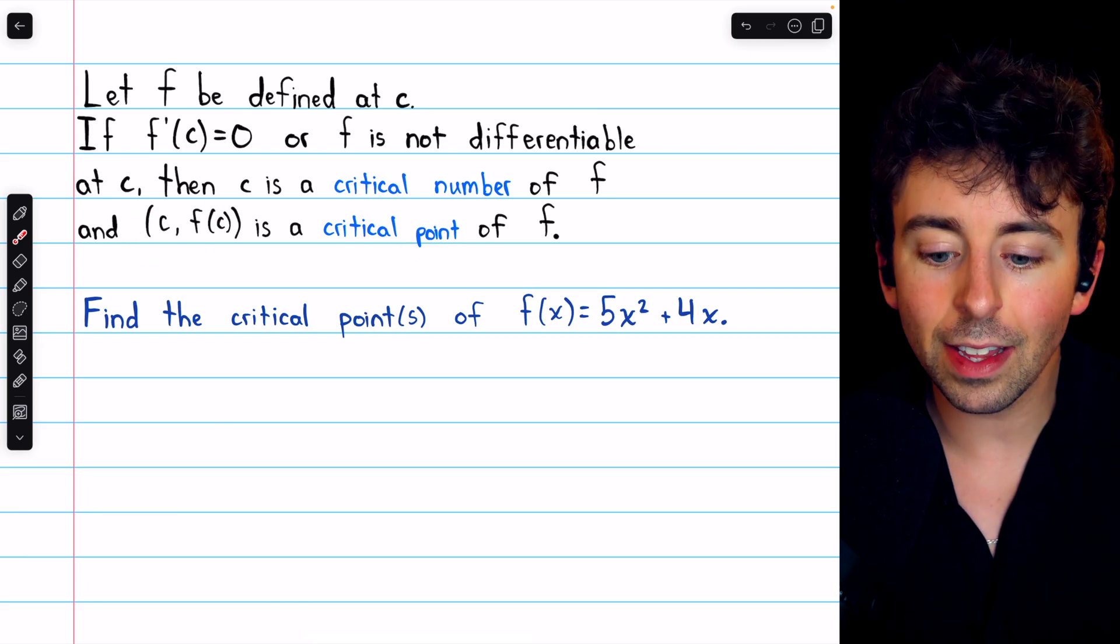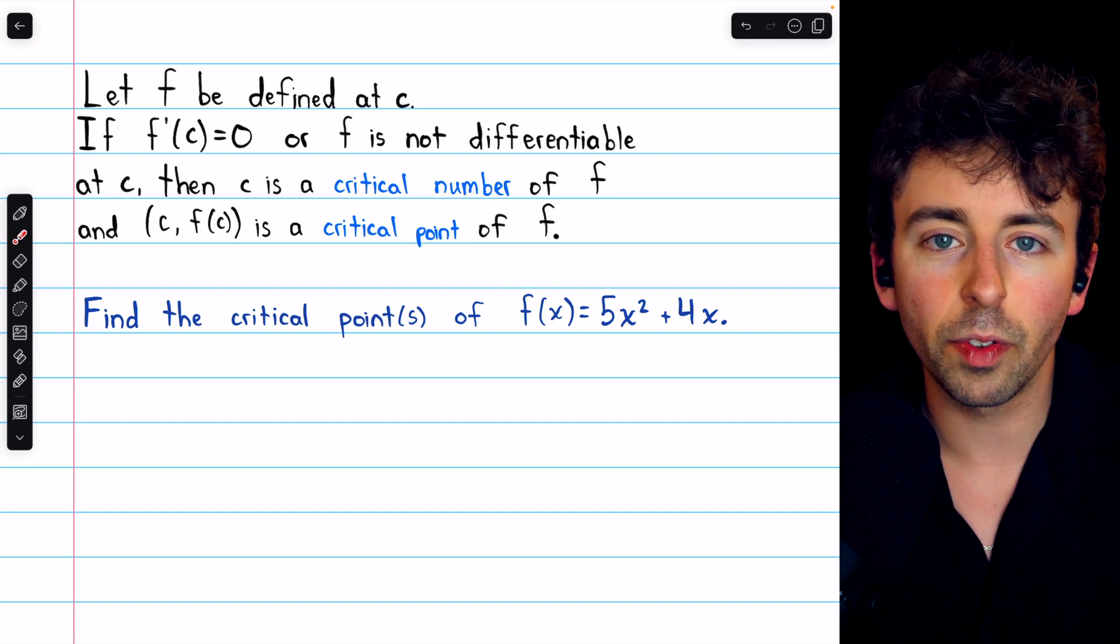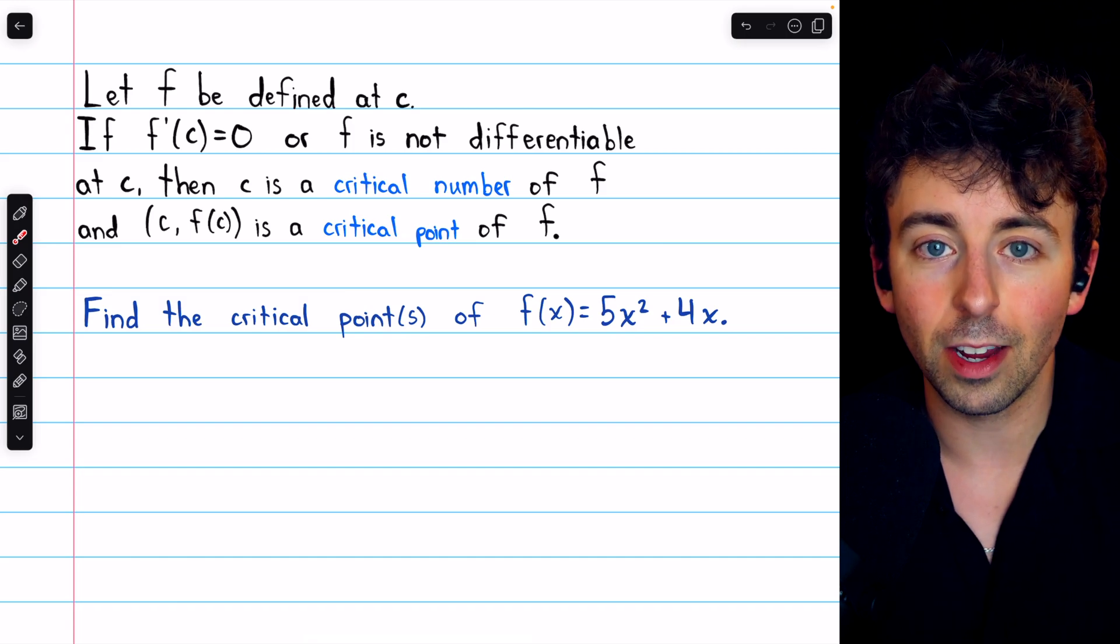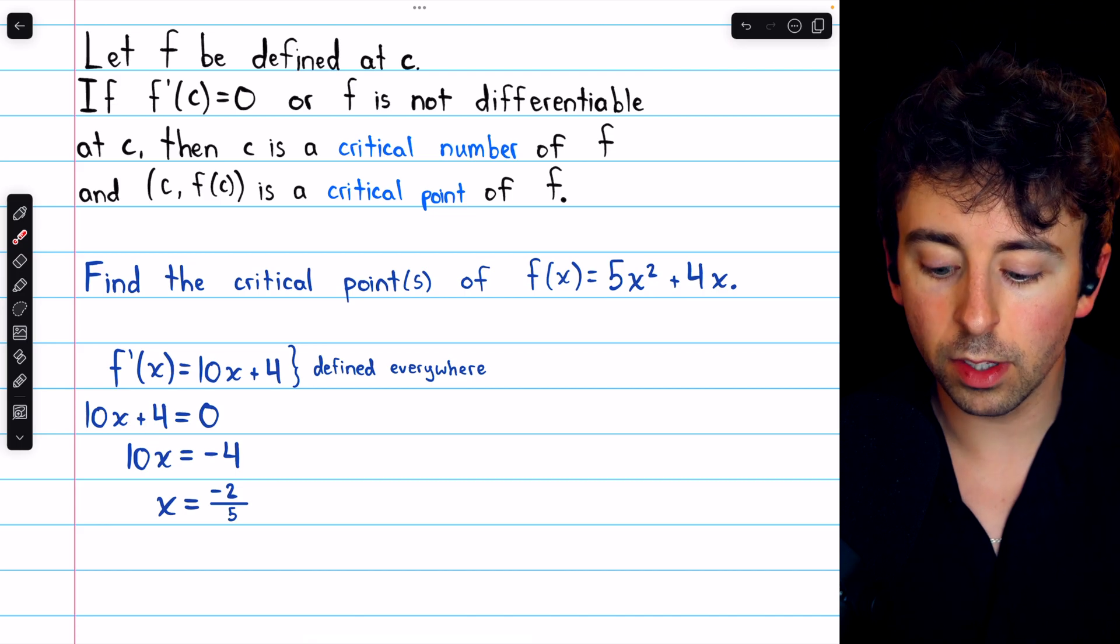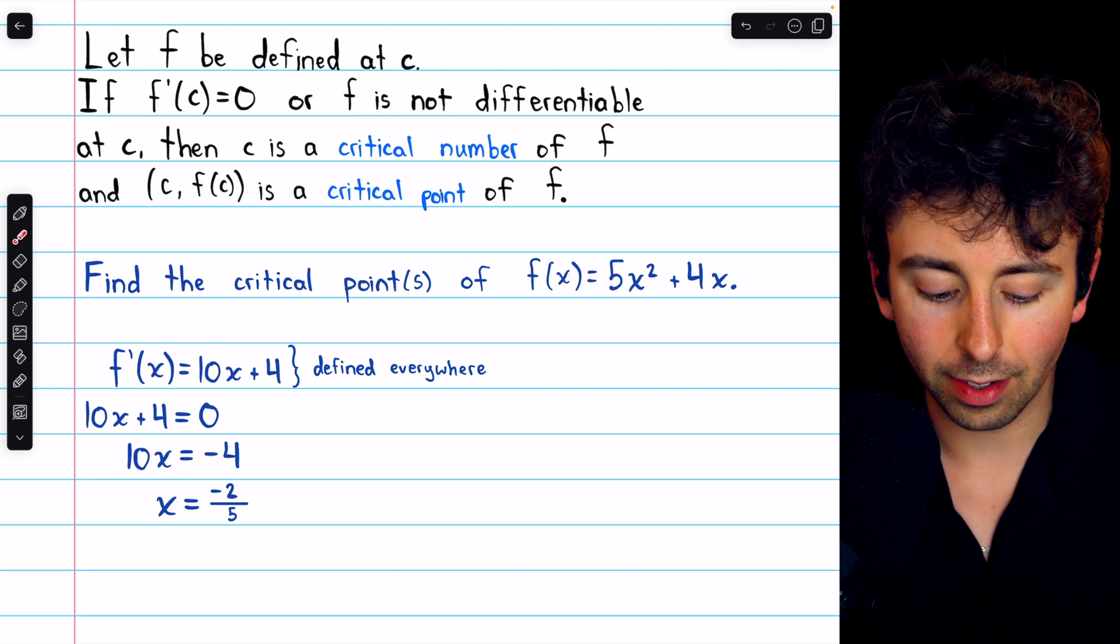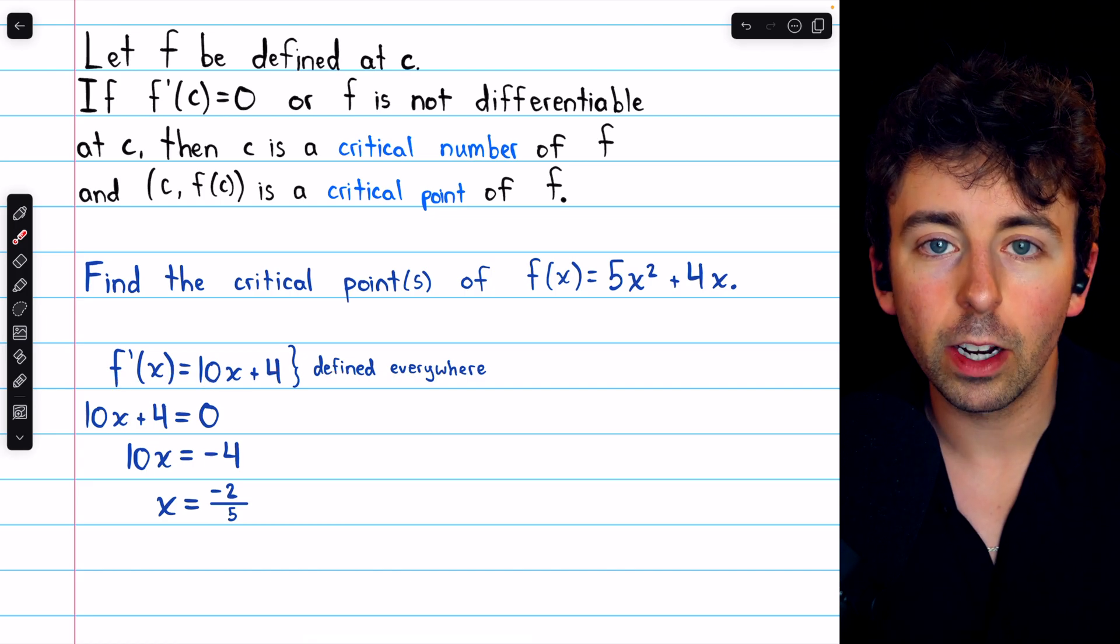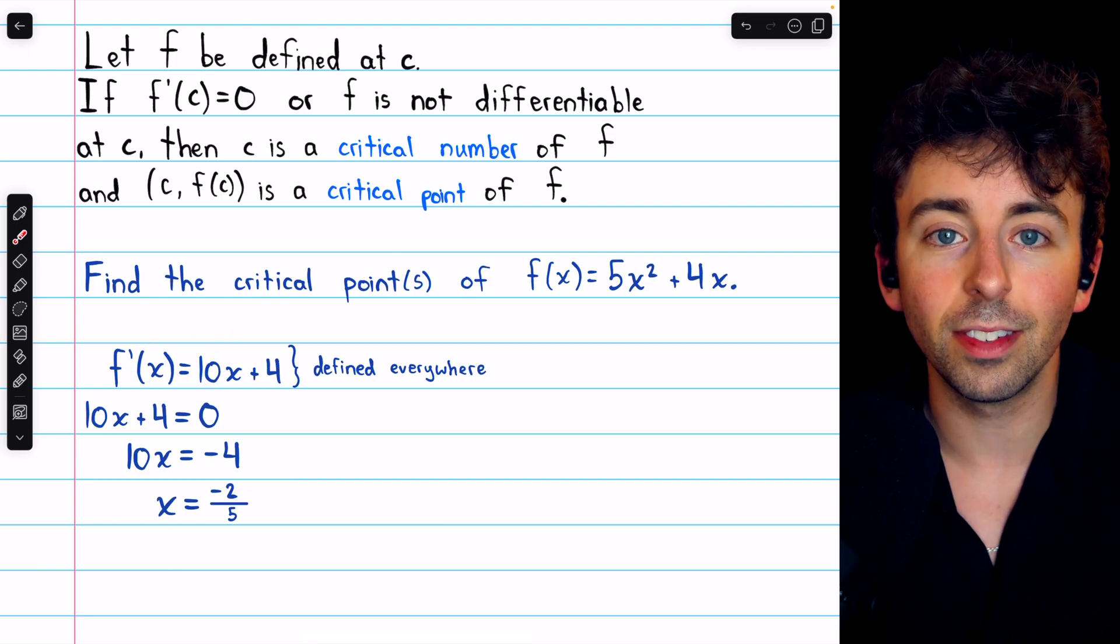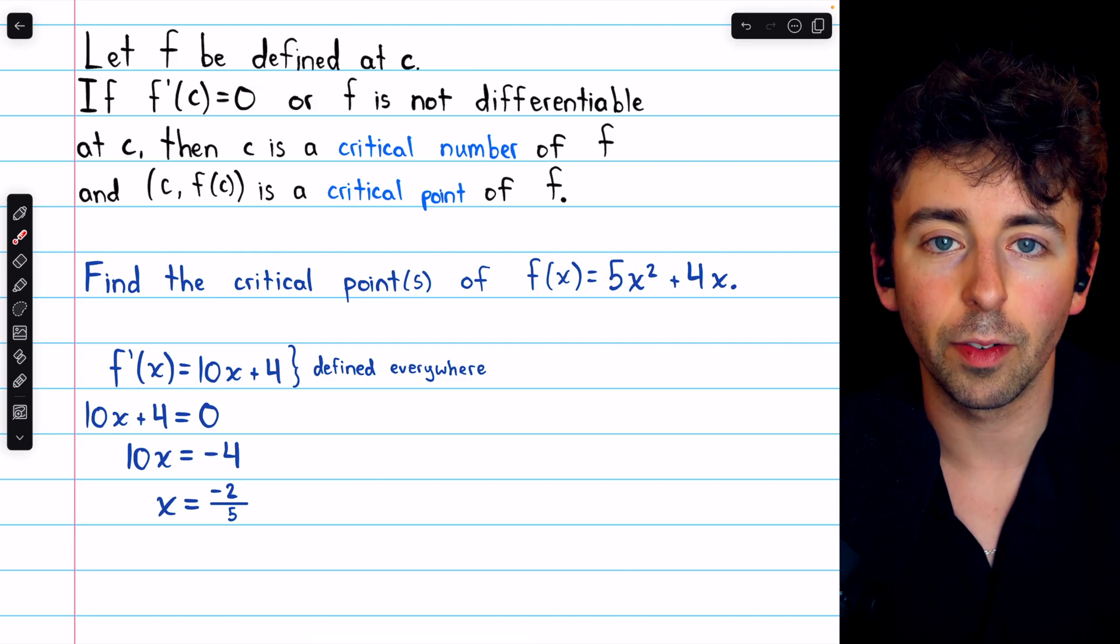By definition, in order to find the critical points of this function f(x), we'll have to take its derivative and see where it doesn't exist and where it's equal to 0. We can take the derivative of this using the power rule. The derivative of 5x² is just 10x, and the derivative of 4x is 4. This derivative is defined everywhere, so the only critical points will be where this derivative is equal to 0, since there's no place where the function is not differentiable.